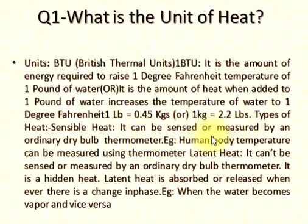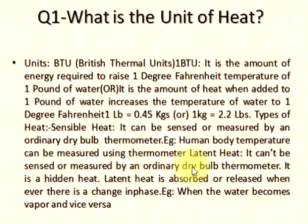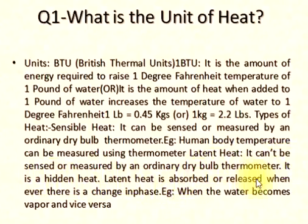For example, human body temperature can be measured using a thermometer. Latent heat — it cannot be sensed or measured by an ordinary dry bulb thermometer. It is a hidden heat. Latent heat is absorbed or released whenever there is a change in phase, e.g., when water becomes vapor and vice versa.